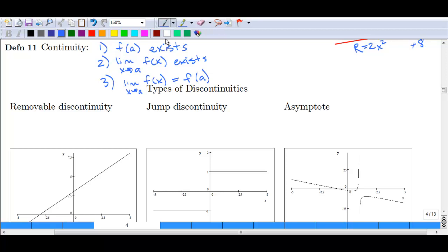Now there are three main types of discontinuities. A discontinuity is when we have that break in the graph.